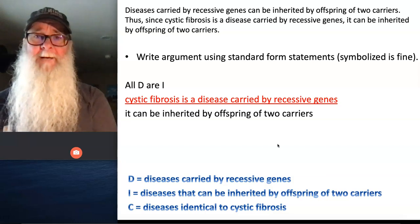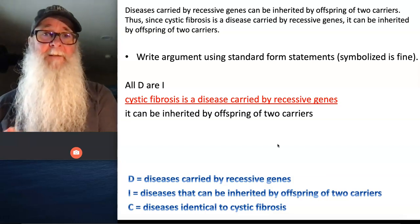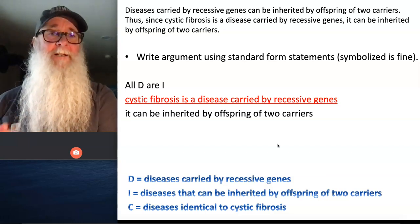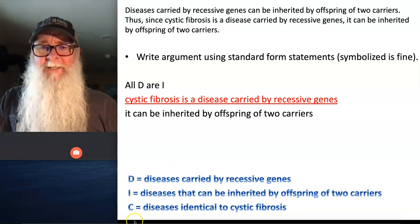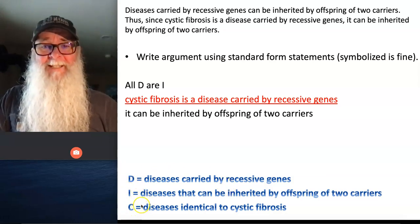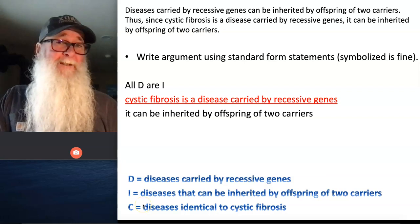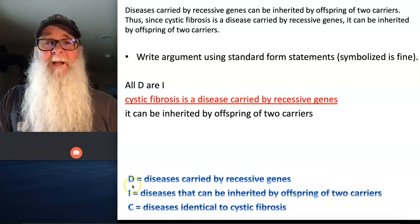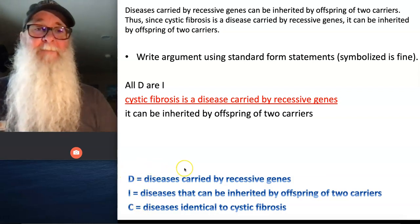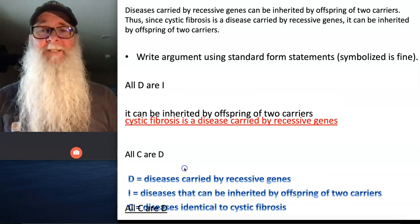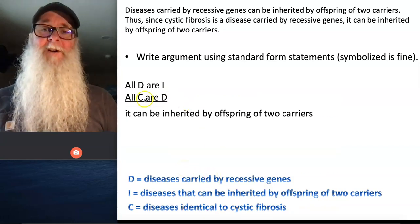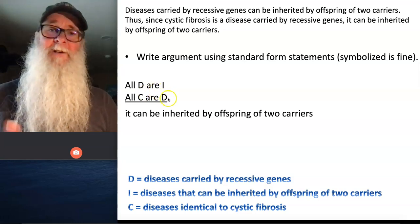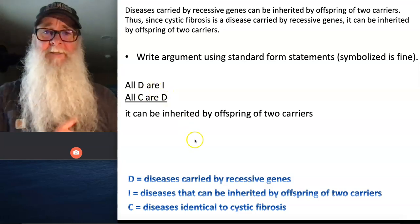Now I move on to my second premise: 'Cystic fibrosis is a disease carried by recessive genes.' This statement involves my term C — diseases identical to cystic fibrosis — and my term D — diseases carried by recessive genes. That gives me the statement: All C are D. All diseases identical to cystic fibrosis are diseases carried by recessive genes.